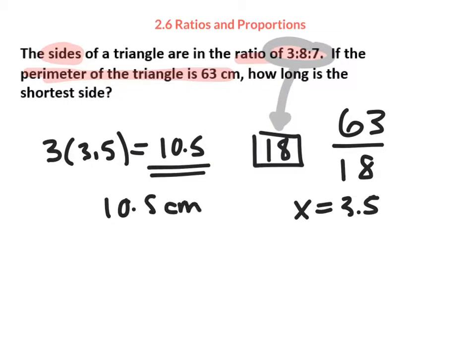They could have asked us for the largest, and then we would have used the 8 or the middle, and we would have used the 7. So again, just by way of other way to do it, and this is a comfort level for you, you could have also set it up this way and said all of these things add up to 63 and solved that way.